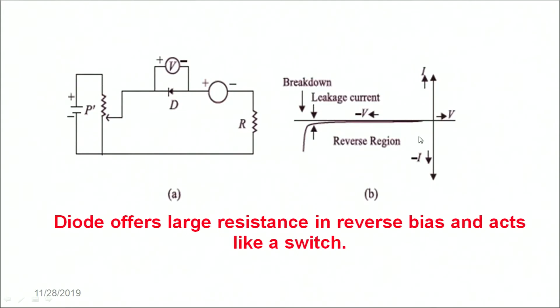What is being observed is a very small amount of current being passed in the reverse bias, and a very large current starts only once the breakdown region is attained. So in the reverse bias the diode does not allow the current to flow; only in the forward bias the diode allows the current to flow.